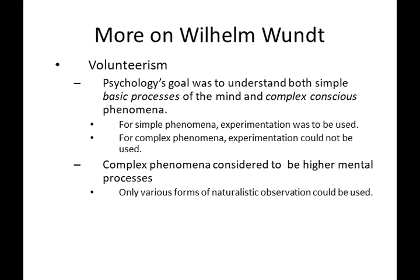Voluntarism — which again has some debate whether or not it was the first school of psychology — held that psychology's goal was to understand both simple basic processes of the mind and complex conscious phenomena. For simple phenomena, experimentation could be used, but not so for complex phenomena. Such things involving higher mental processes would require different techniques in order to examine those phenomena.